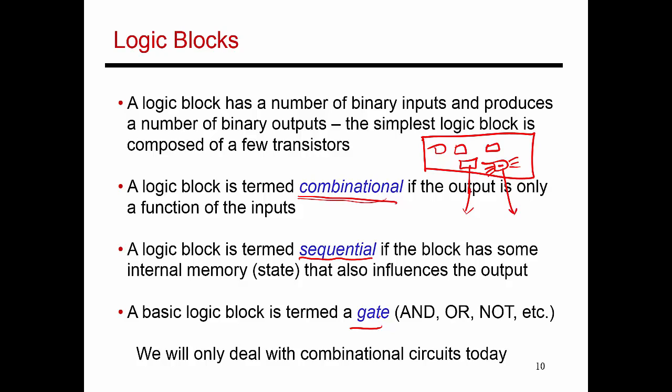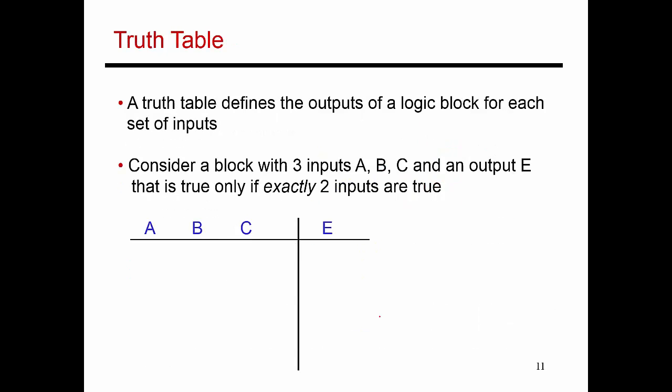You can combine these gates to produce much more interesting circuits. Before we are done, you will see how to implement an adder using these basic gates. When you come up with a logical circuit, you can also write a truth table that describes how that circuit behaves.